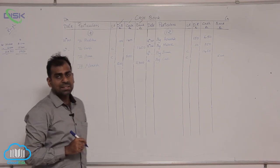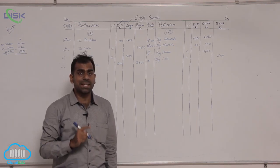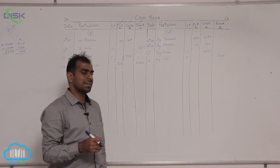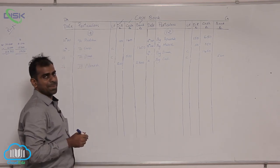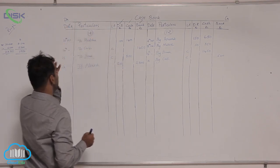Now, the last transaction that is on 29th is paid into bank, paid into bank means cash deposited into bank. So, bank is the receiver, so we have to debit bank account means enter the amount in the bank column on the debit side.